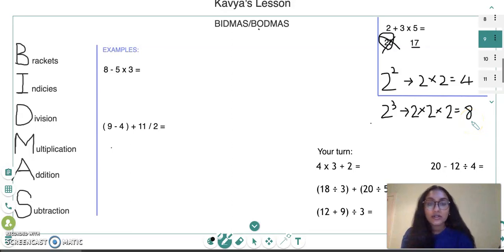Then we have division. Just remember, division can have two different types of signs: we can have this diagonal line, which is kind of like a fraction, and we can also have this line with a dot at the top and bottom. It's important we recognize the operations in different forms as well. Then we have multiplication, addition, and subtraction.